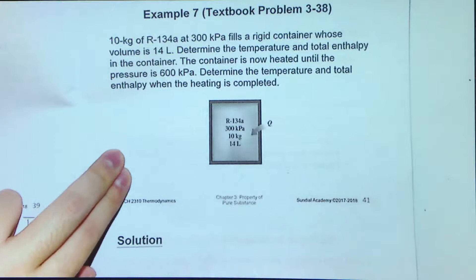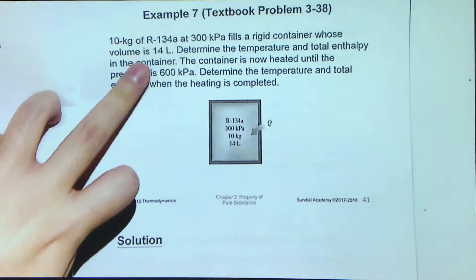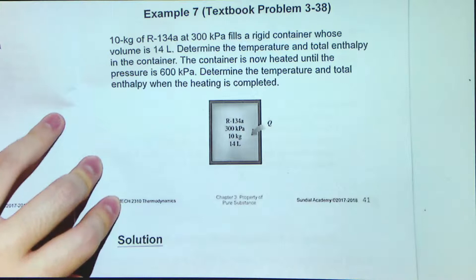10 kilograms of R-134a at 300 kilopascal fills a rigid container whose volume is 14 liter. Remember how to change this liter to m³? We just divide this number by 1000.